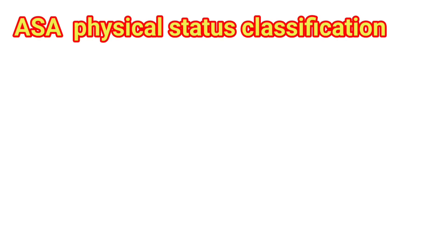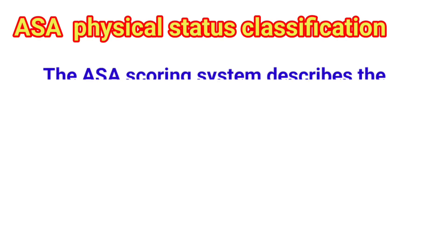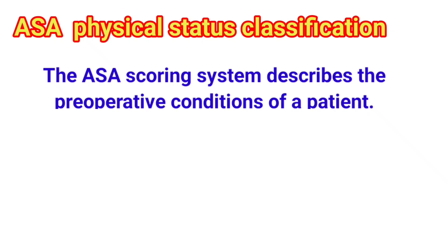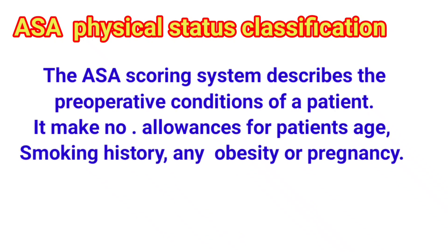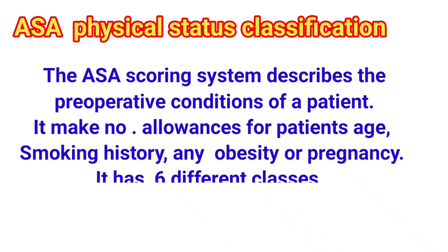ASA classification. The ASA scoring system describes the preoperative condition of a patient. It makes no allowances for the patient's age, smoking history, any obesity, or pregnancy. It has six different classes that will be explained in the next slide.